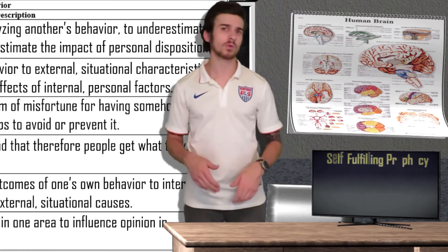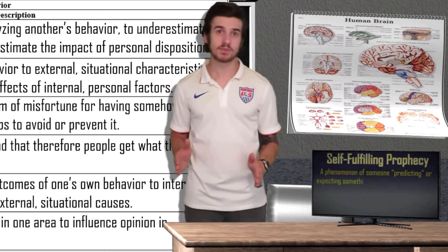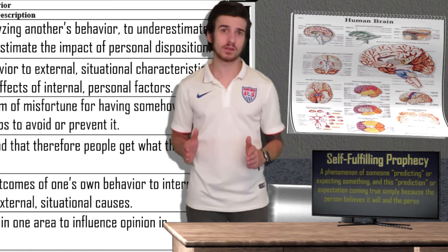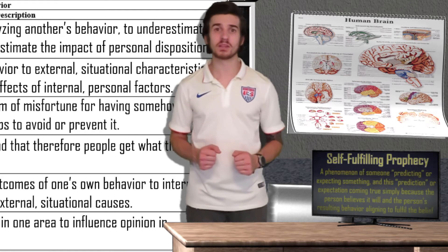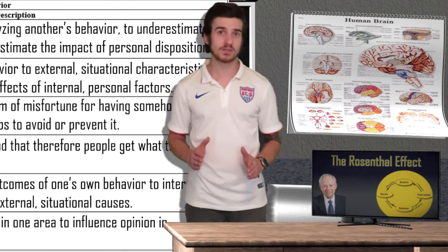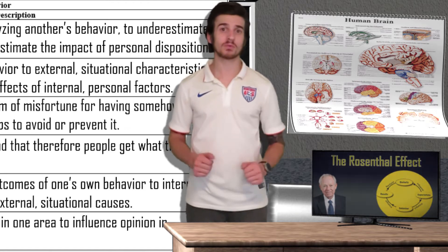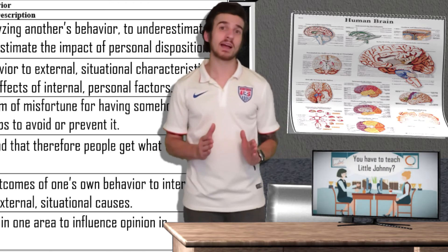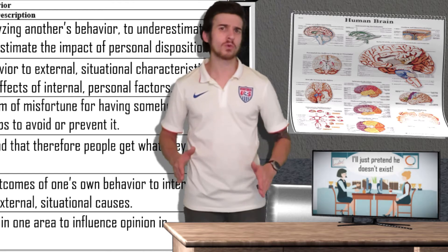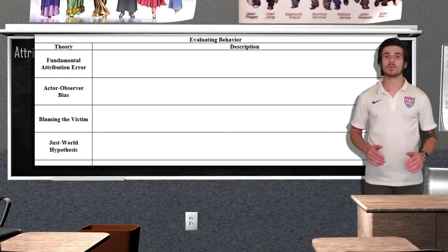Referred to as the Pygmalion or Rosenthal effect, a self-fulfilling prophecy is a phenomenon of someone predicting or expecting something, and this prediction or expectation comes true simply because the person believes it will and the resulting behavior aligns to fulfill this belief. This concept was proven when psychologist Robert Rosenthal found that when teachers have higher expectations for their students, they perform better, while lower expectations lead to a decrease in performance. So if a teacher heard that little Johnny coming into their class is a lost cause, this thought might lead them to not give Johnny the attention he needs to be successful, which would result in Johnny's performance not being up to par.